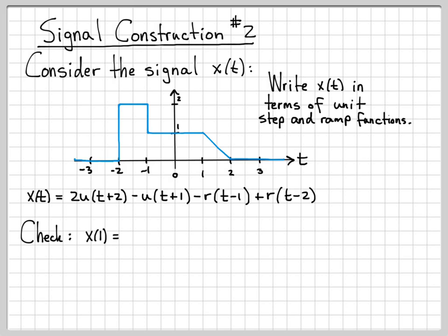So if we replace all the t's with ones, we get 2u(3) - u(2) - r(0) + r(-1). The ramp function is zero for t less than or equal to zero, so we know these last terms are both zero. That just leaves us with the first couple terms, which are two times one. The unit step at times three is on, so it has a value of one. And then minus one, because u at time two is equal to one. If you do this, that gives you one.